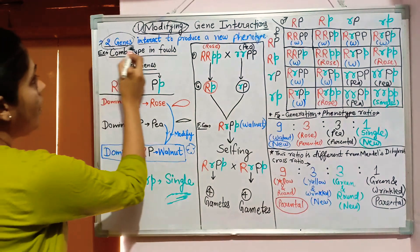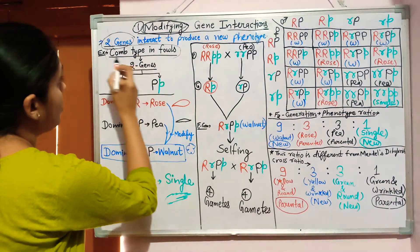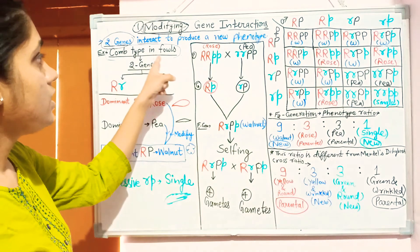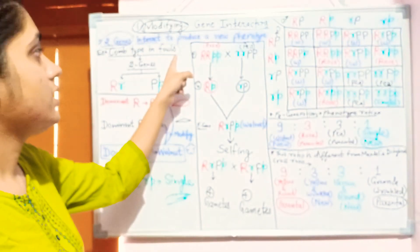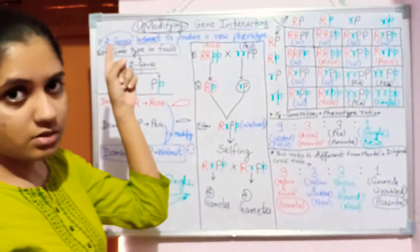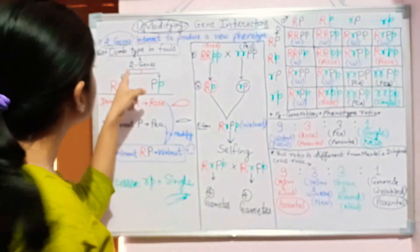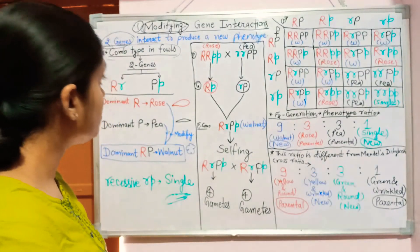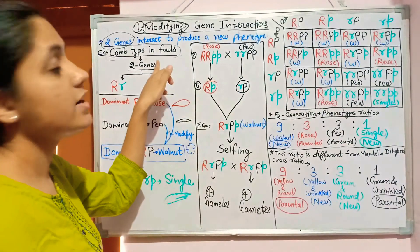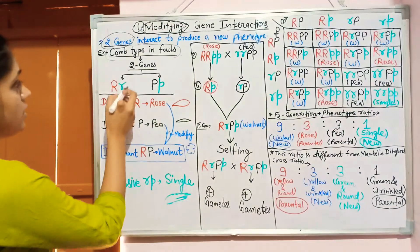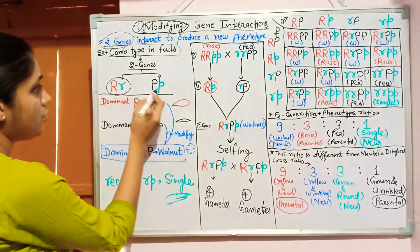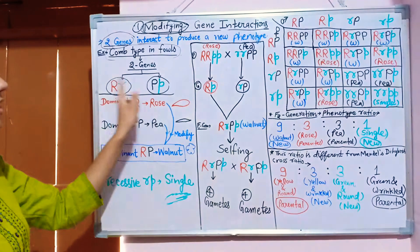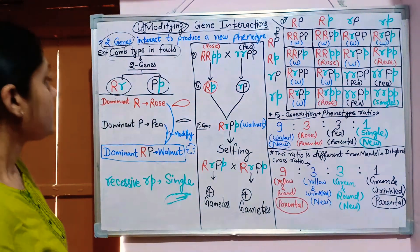The example is the comb type in fowls. For this character, two genes are responsible. Here, capital R and small r, and capital P and small p — these two genes are responsible for comb type.